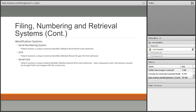Next, we talk about identification systems — how we identify the patient. We identify patients by medical record number, not name or social security number. The MRN is assigned through the master patient index. The first type is the serial numbering system: every time a patient is admitted, they receive a brand-new medical record number whether they've been there before or not. This helps registration because staff don't need to look up prior visits — they just re-register the patient.